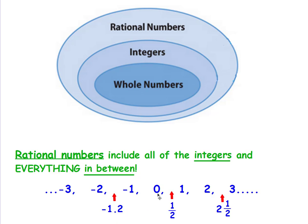But let's look at this. Zero is a whole number, therefore it's also in the integer group, and it's also a rational number. If you look at two, two is a whole number — it's also an integer and a rational number. Negative three is not a whole number, therefore it's an integer, and therefore it's also a rational number.